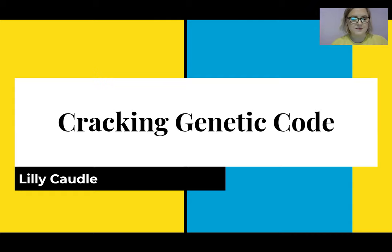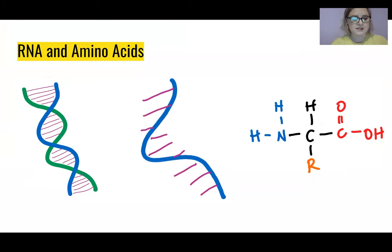This is cracking the genetic code. In the early 1960s, geneticists were racing to crack the genetic code. More specifically, they were trying to determine what sequences of RNA coded for what amino acids.